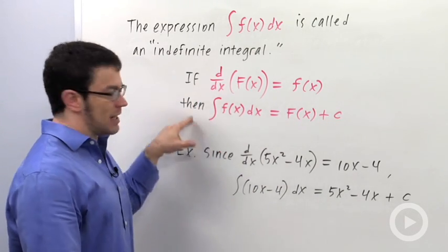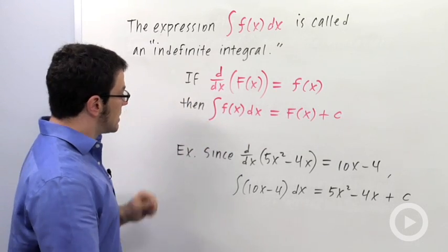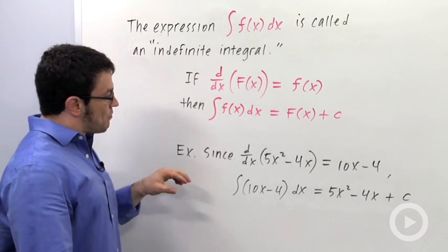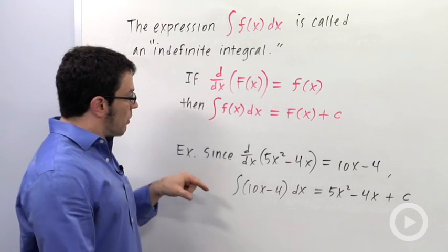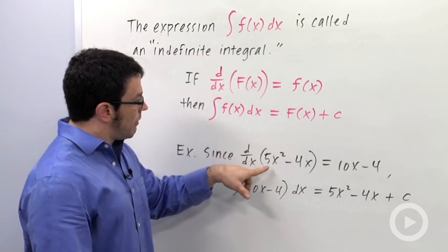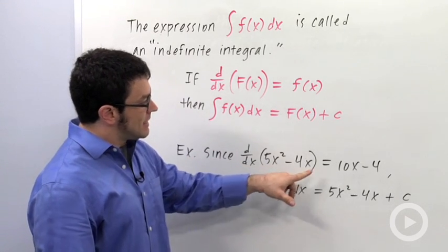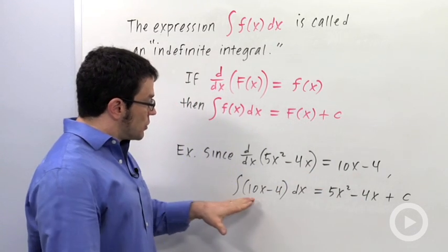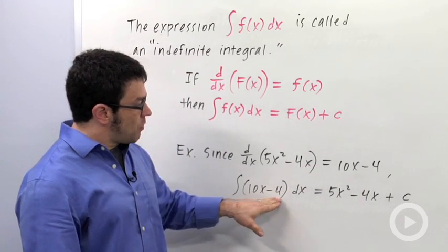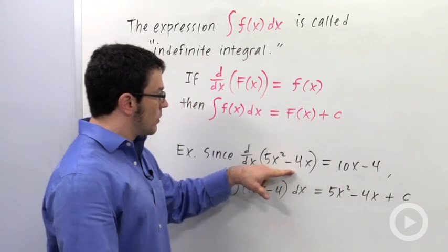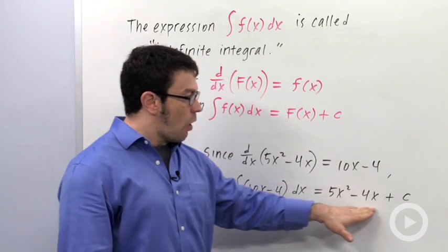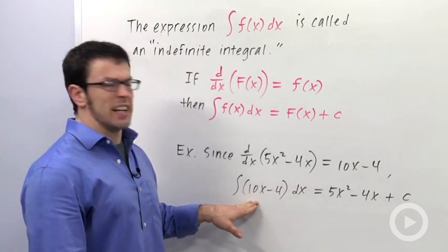We're going to be solving problems like this in the next few lessons. Let's look at an example. You could just use what you know about derivatives to create integral formulas. For example, the derivative of 5x² - 4x equals 10x - 4. So you can turn that around. The integral of 10x - 4 is 5x² - 4x + c. Just add plus c to your original function, and that gives you all the antiderivatives of 10x - 4.